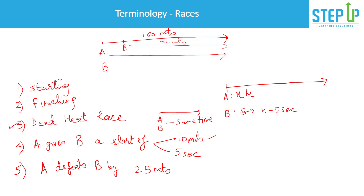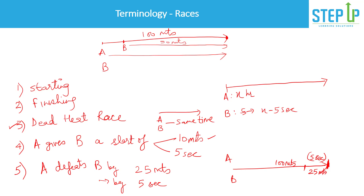The last statement you'll see is 'A defeats B by 25 meters.' In a 100-meter race, by the time A finishes the race, B is yet to cover 25 meters. A has already completed the race and B still has 25 meters remaining. Similarly, 'A defeats B by five seconds' means B will take five seconds more than A to finish the race.